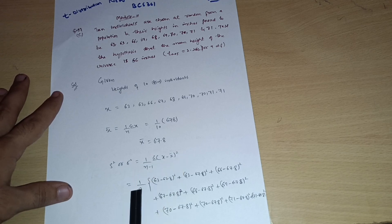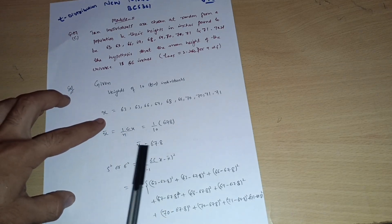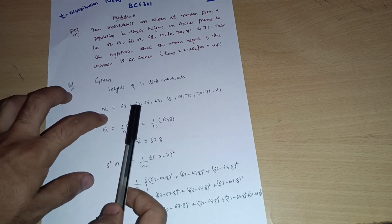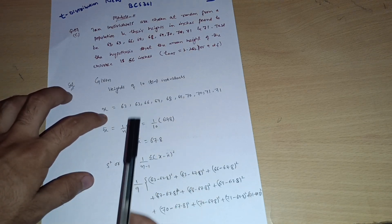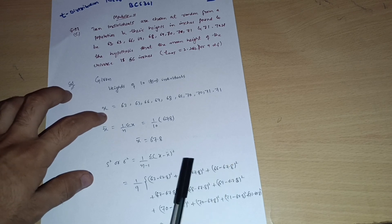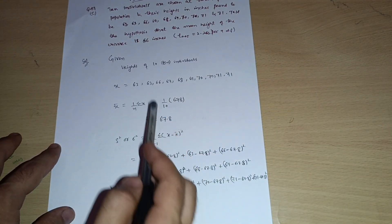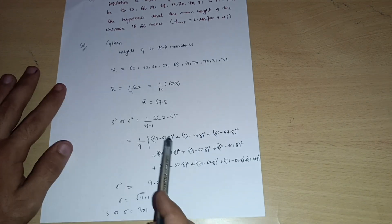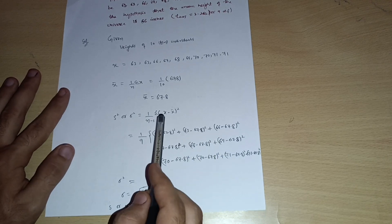So n is given 10 minus 1, that is 1 by 9 summation of x minus x bar. So x value is 63, x bar is 67.8. So 63 minus 67.8 whole square, plus 63 minus 67.8 whole square, 66 minus 67.8 whole square, like that. So you have to sum up like this one. I hope you will do this simple calculation here. This is the summation of x minus x bar whole square.